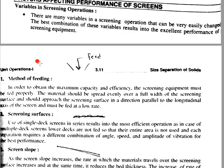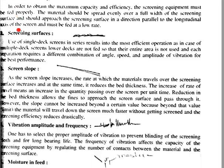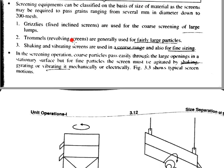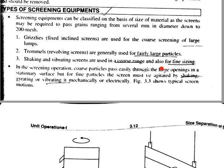Now, types of screening equipment — this is most important. There are many types of screening equipment. Screening equipment can be classified on the basis of size of material, as screens may be required to pass grains ranging from several millimeters in diameter down to 200 mesh size.